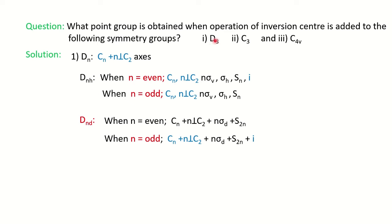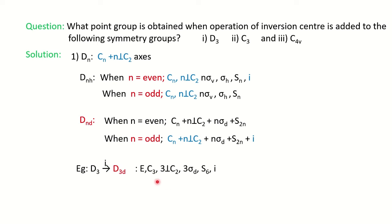Our group is D3. Since D3 has odd n and we are adding inversion, we look at Dnd where odd n gives inversion. For Dnh, inversion is present only when n is even, but 3 is odd. So our molecule with D3 symmetry, on adding inversion, will give the D3d point group. The symmetry elements are: E, C3, 3 perpendicular C2 axes. Since it is dihedral, 3 sigma d planes are present, along with S6 (since it is S2n, so 2×3=S6).